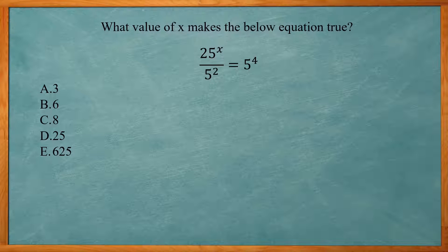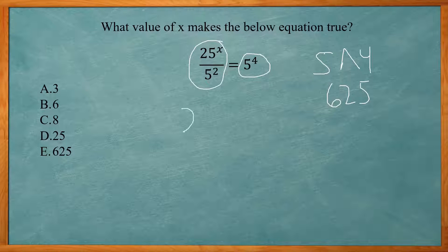All right, so this one says what value of x makes the below equation true. So first you want to do is figure out what 5 to the fourth power is. You just type it in the calculator, that gives us 625. So we want to figure out what value of x gives us 625 for this side. So first we're going to do 25 raised to the third power divided by 5 to the second. All right, so if you do that in the calculator, we get 625.